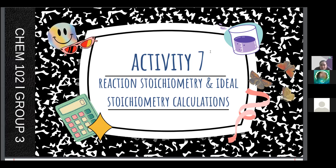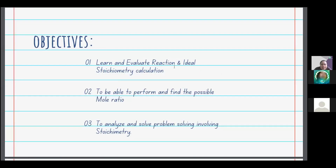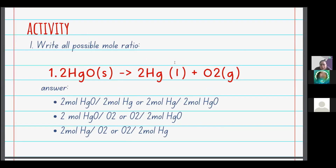This is still under stoichiometry — we have reaction stoichiometry and ideal stoichiometry calculation. Previously we covered conversion of grams to moles and moles to grams, and even converting the number of atoms to both moles and grams. This time, we will talk about the full-blown stoichiometric problem, starting with the mole ratio.